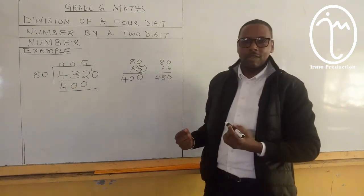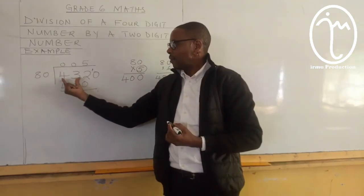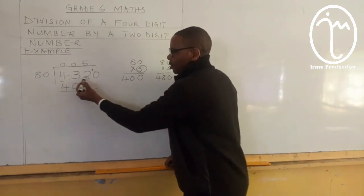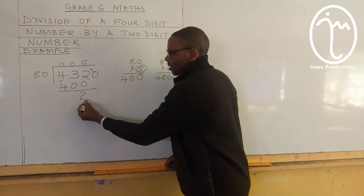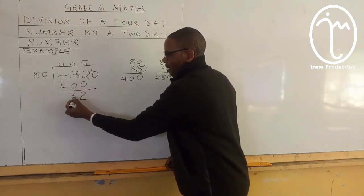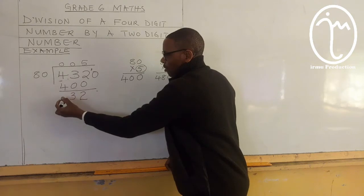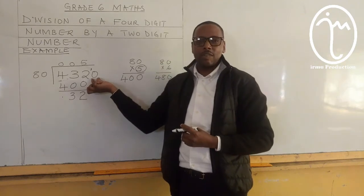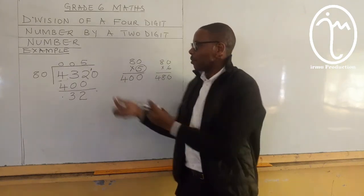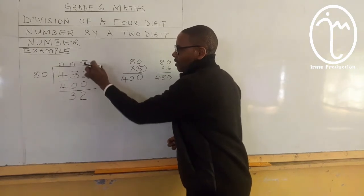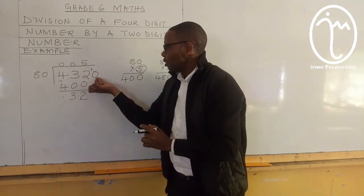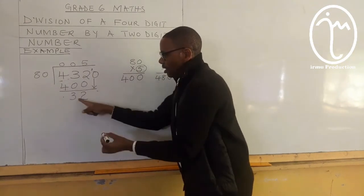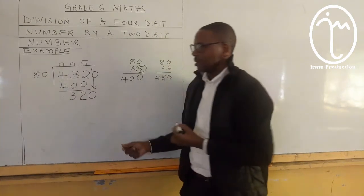My learner, after that, we are supposed to subtract 432 minus 400. So, I get the difference: 2 minus 0 is 2, 3 minus 0 is 3, then 4 minus 4 — nothing remains. So now we have a digit that we have not used — the last digit. We are still going to continue the division and we are going to drop this 0 to join this number here, like that.